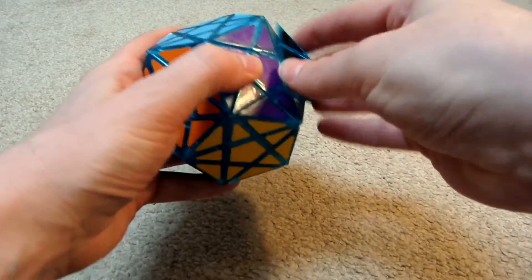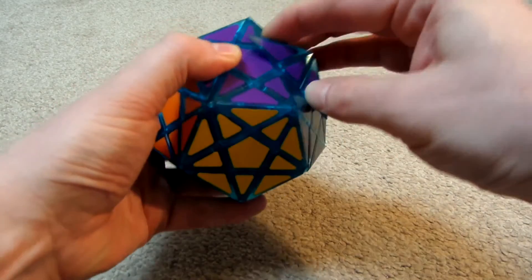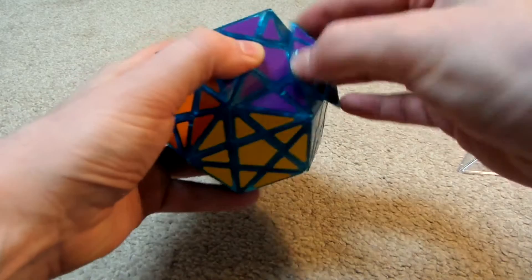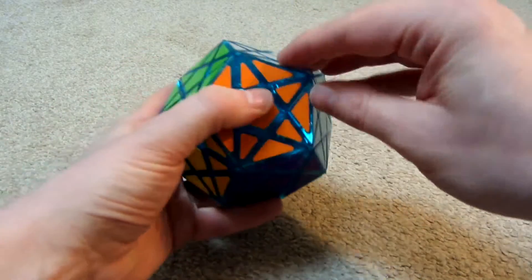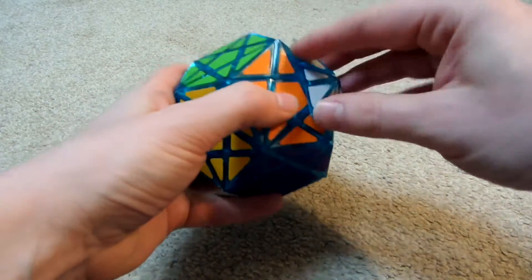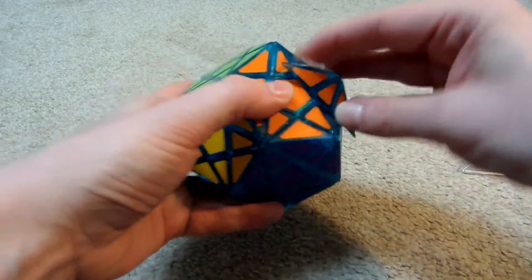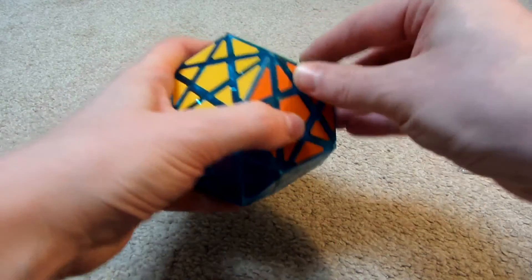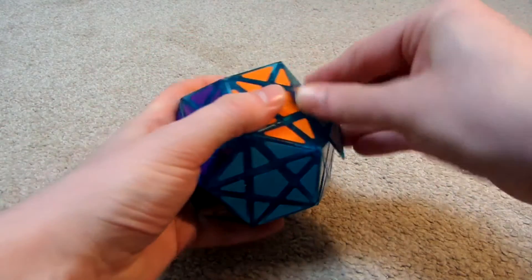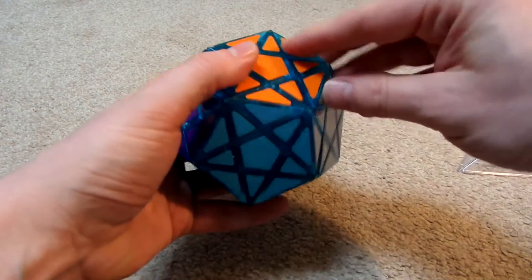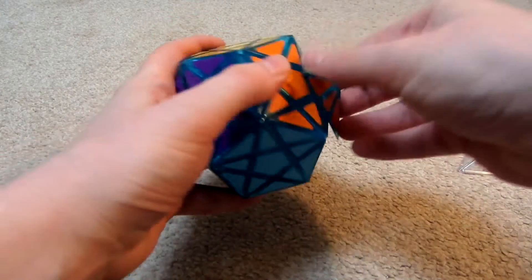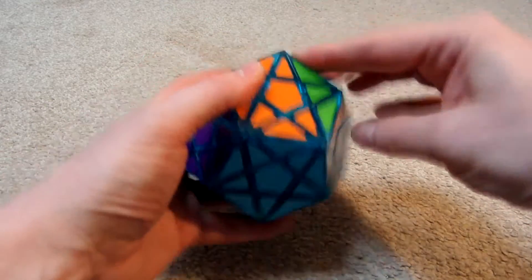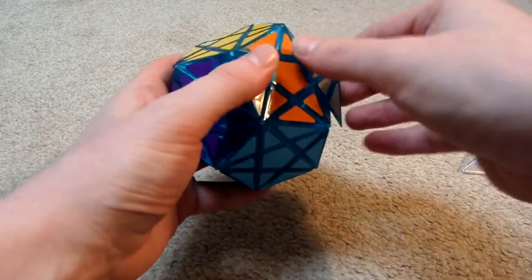Okay, there, you can see it's got stuck. So, yeah, what I'm going to do is I'm going to apply a bit of Maru lube to it and see if that improves it. It feels as though maybe the tensions are way too tight on this, but as you probably already know, I don't like to adjust the tension on puzzles.